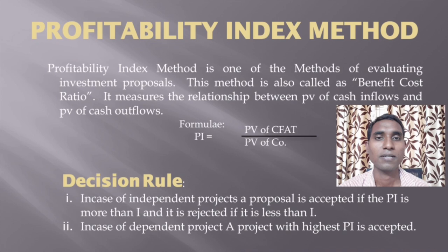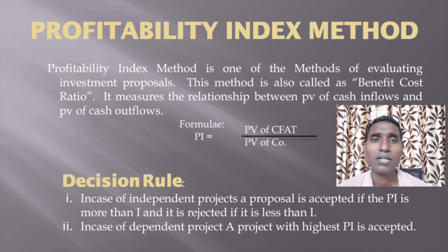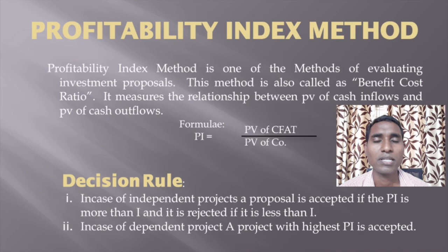This method is similar to net present value method, but only the last step differs. Profitability index method is one of the most popular methods of capital budgeting techniques used to evaluate capital budgeting proposals or investment proposals. This method also has another name — benefit cost ratio. Most of the times this question is asked in interviews. It measures the relationship between present value of cash inflows to present value of cash outflows.